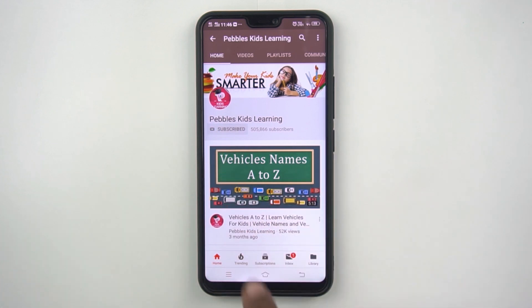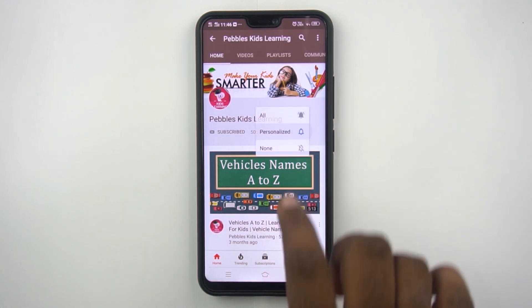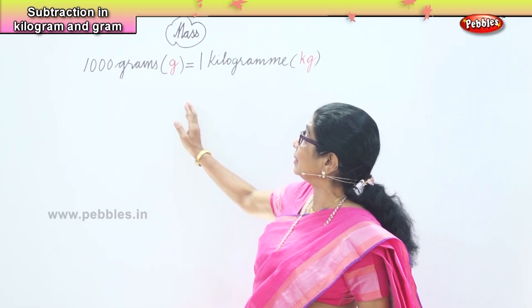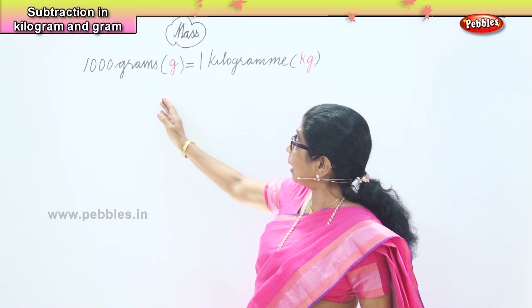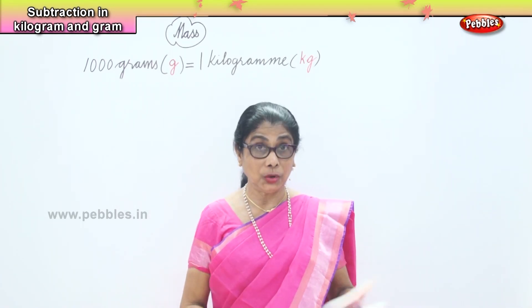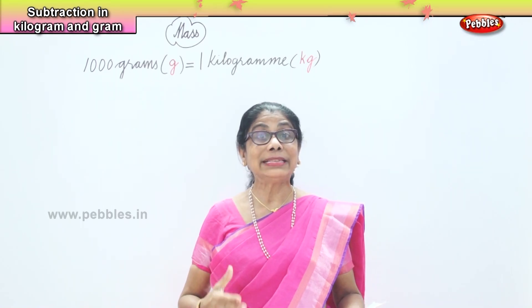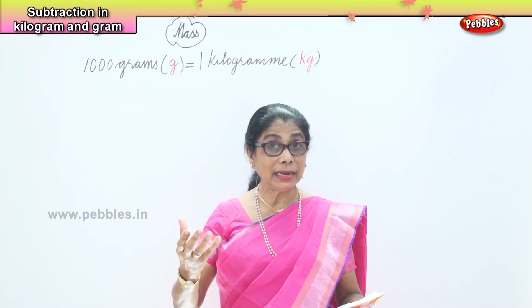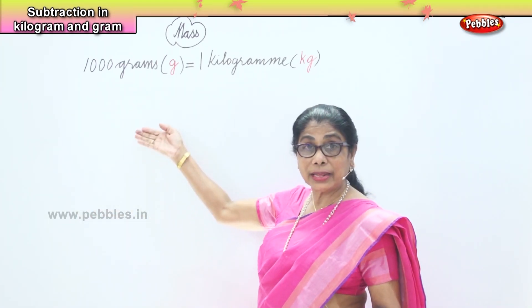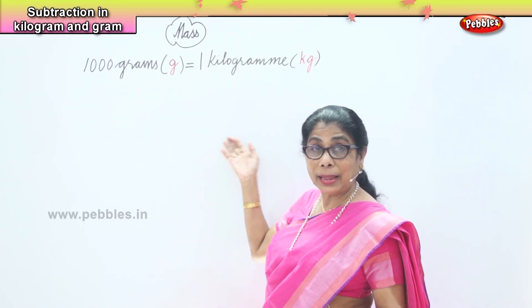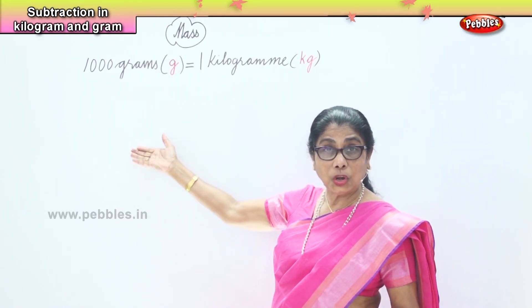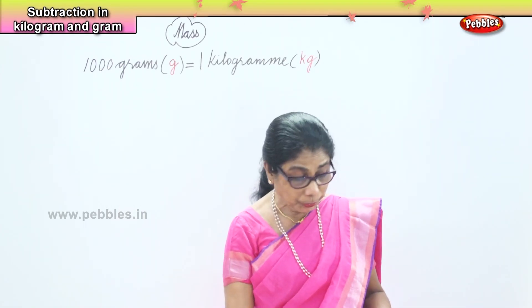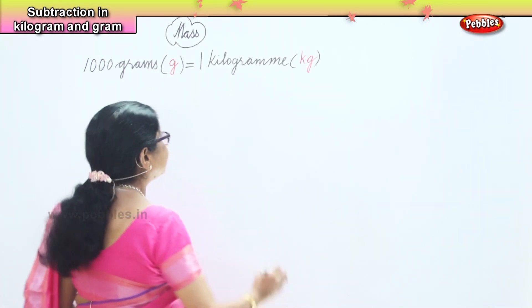Please subscribe to our channel and for latest updates click on the bell icon. Hi children, now we are working with mass: 1000 grams equals 1 kilogram. Now we are going to learn subtraction. We'll subtract two quantities — from big to small. First we'll arrange in kilogram and gram, place the numbers correctly, then minus the small from the big. So we are doing subtraction.